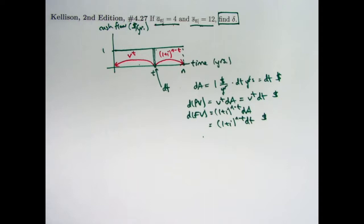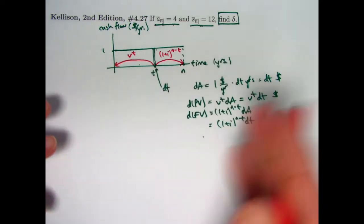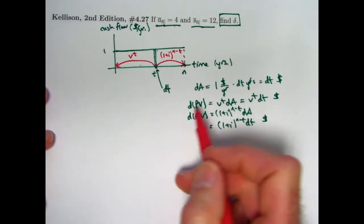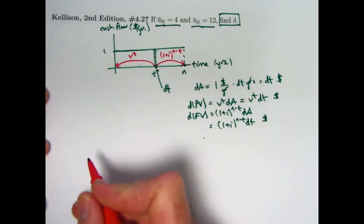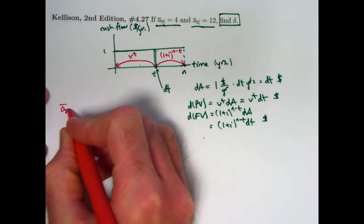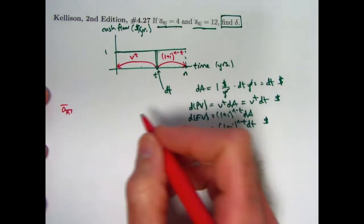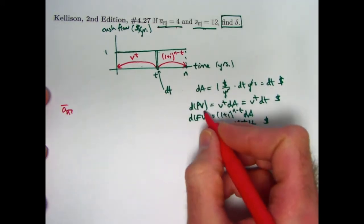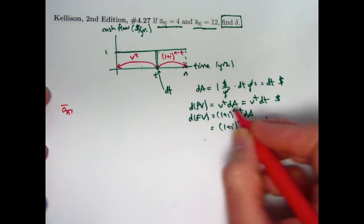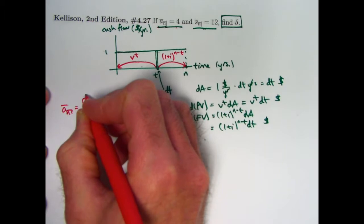Alright, now how do you go from this to the actual present and future values of the entire income stream? You integrate. You add these up. That's the idea of integration. A bar sub n is the present value at time 0 of the entire income stream. That's found by integrating dpv, integrating this thing here, over the amount of time that the income stream is valid for, from 0 to n. This is the integral to do.